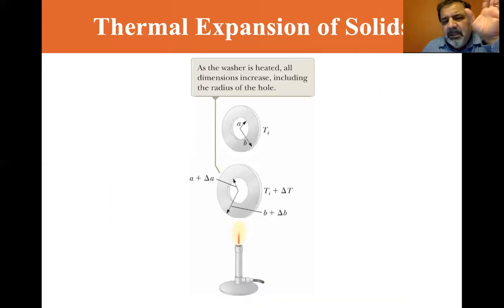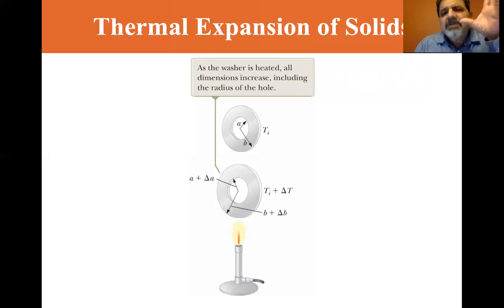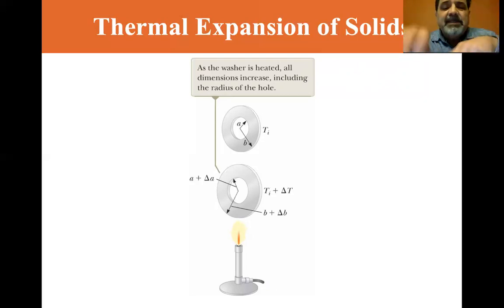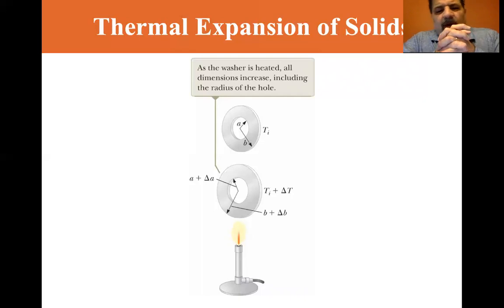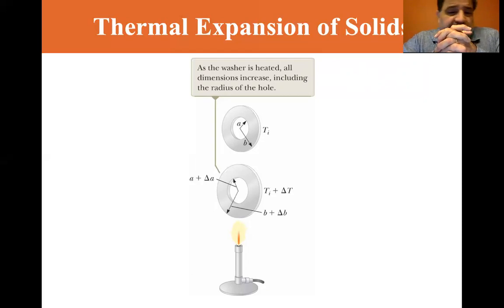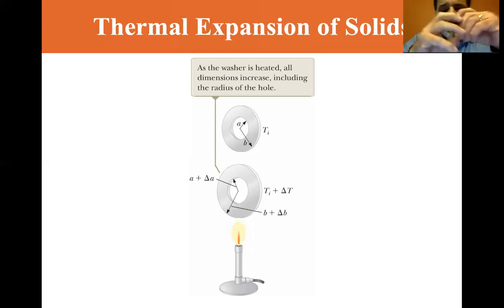Now let's look at a washer. As the washer is heated, all dimensions increase, including the radius of the hole. It would expand the same as if it were filled in. At initial temperature, the inside radius of the washer is 'a' and the outside radius is 'b'. As temperature increases, 'a' increases to a plus delta-a, and 'b' increases to b plus delta-b. The whole thing increases as if it were filled in.